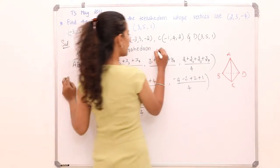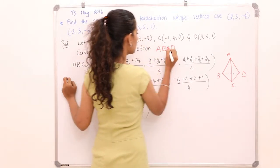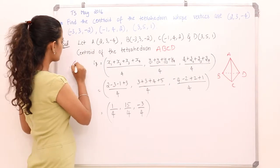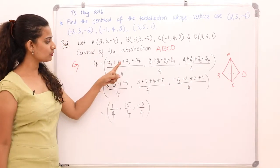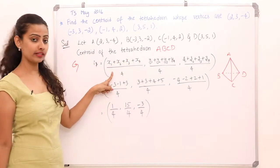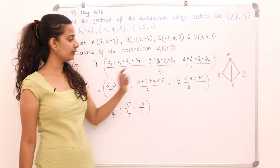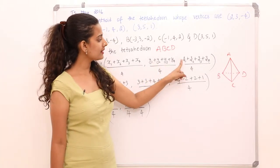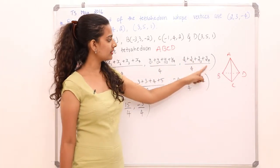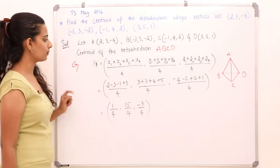Centroid of the tetrahedron ABCD, G is (x1 + x2 + x3 + x4) divided by 4, (y1 + y2 + y3 + y4) divided by 4, and (z1 + z2 + z3 + z4) divided by 4.